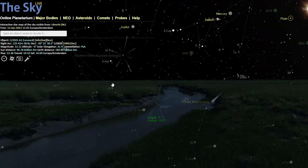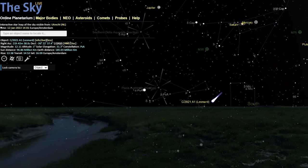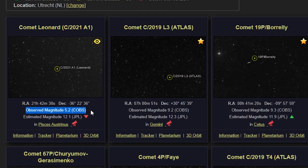At the time of this video, Comet Leonard is one of the brightest comets in the night sky. The brightness of these objects in space are expressed in magnitude. The lower the magnitude is, the brighter the object.